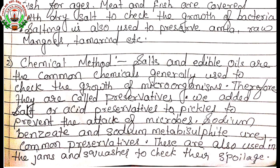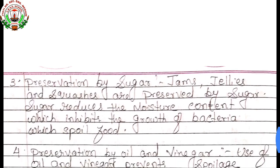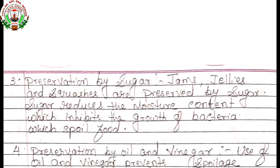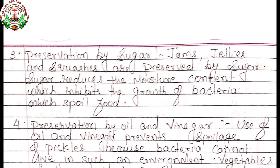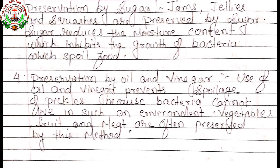These preservatives are also used in jams and squashes to check spoilage. Third method: preservation by sugar — jams, jellies, and squashes are preserved by sugar, which reduces the moisture content and inhibits the growth of bacteria that spoil food. The last method is preservation by oil and vinegar — use of oil and vinegar prevents spoilage of pickles because bacteria cannot live in such an environment. Vegetables, fruits, and meats are often preserved by this method.